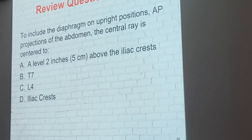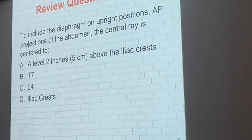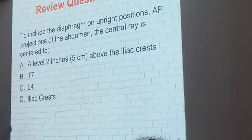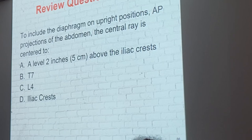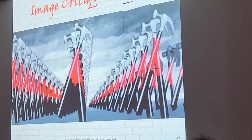To include the diaphragm on upright AP projections of the abdomen, the central ray is centered two inches above the iliac crest. That's the main reason we go two inches above — to ensure the diaphragm is on the image.